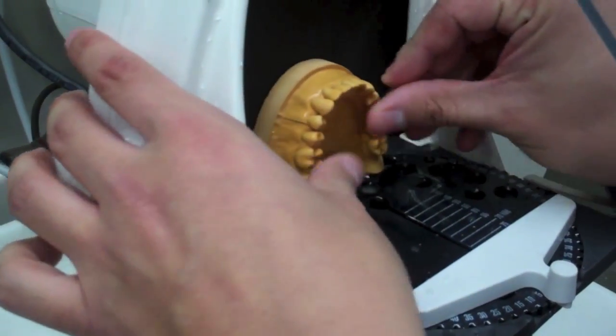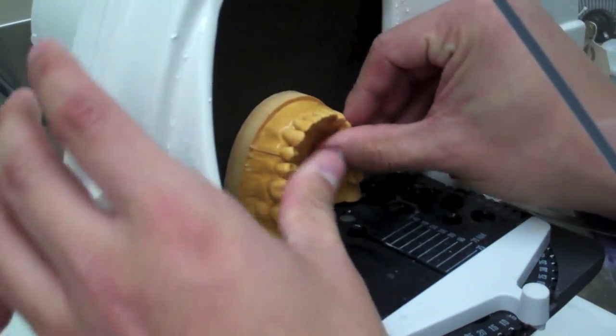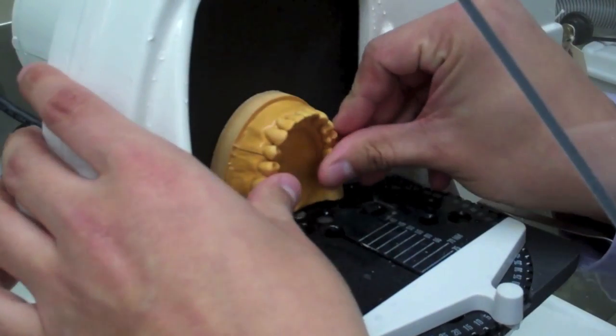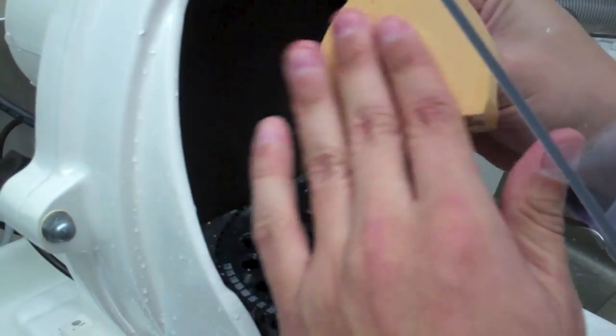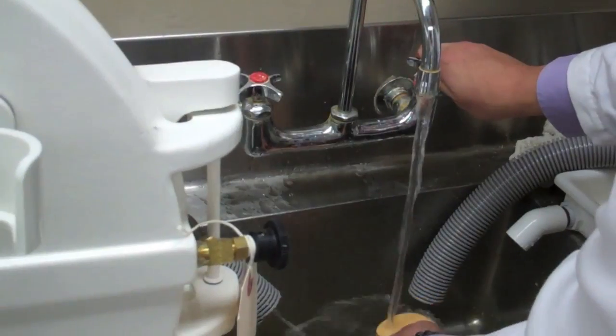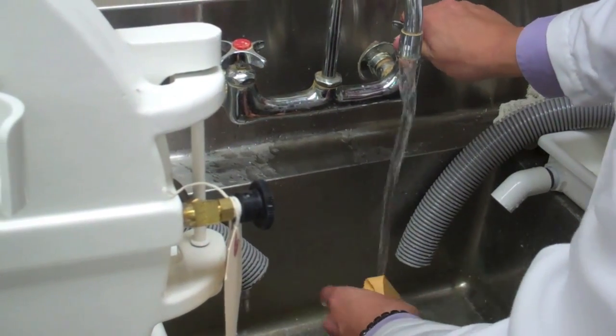The bottom of the cast must be trimmed flat. This is to ensure that when placed on a flat surface, it sits firmly. When finished, don't forget to turn off the trimmer and rinse the model.